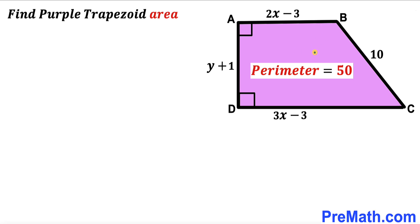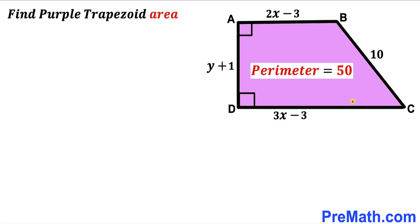Welcome to pre-math. In this video we have a purple shaded trapezoid ABCD, such that its side lengths are represented by 2x minus 3, y plus 1, 3x minus 3, and 10 units respectively. The perimeter of this trapezoid is given as 50 units, and our task is to calculate the area of this purple shaded trapezoid.